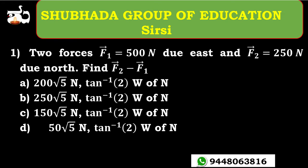Look at the problem here. Two forces: F1 vector equal to 500 N due east, and F2 vector equal to 250 N due north. Find F2 vector minus F1 vector. You can expect such problems in Karnataka CET 2021 or in many competitive examinations.